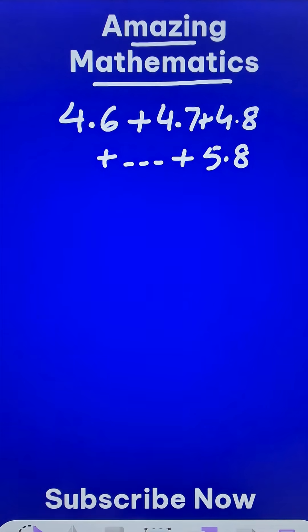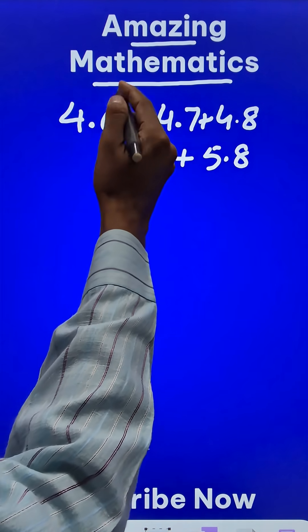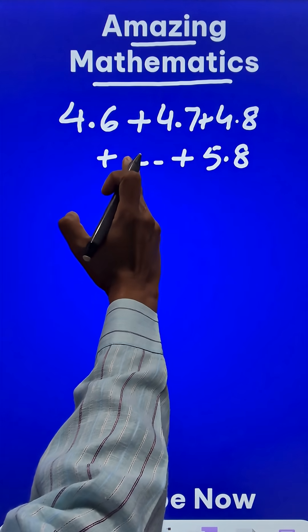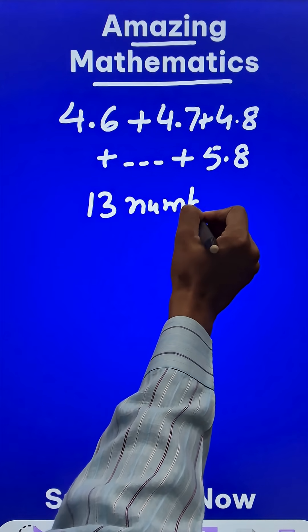Now I want to add all these numbers. So first thing is, how many numbers are these? Starting from 4.6 to 4.7, 4.8, 4.9 and 5. There are 5 numbers and then 5.1 to 5.8 are 8 numbers. So there are 13 numbers which I have to add.